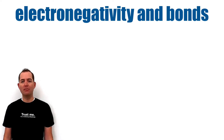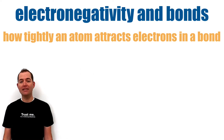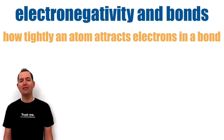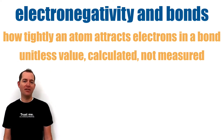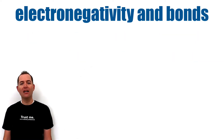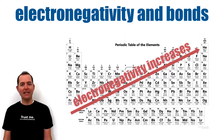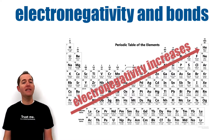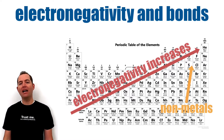The type of bond formed between atoms is based on their electronegativity. Electronegativity describes how tightly an atom attracts electrons in a bond. It is a unitless value that is calculated rather than measured, and it increases as you move up and to the right on the periodic table.